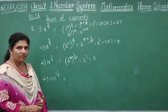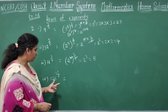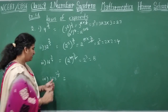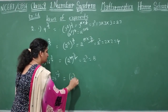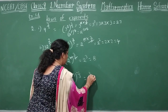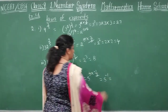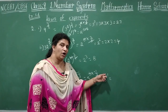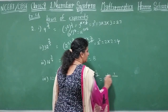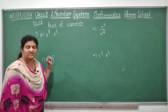Last sub-question: 125 power minus 1 by 3. There is a negative power — no problem. 5 multiplied 3 times gives 125, so write 5 power 3 whole power minus 1 by 3. Applying the law: 3 and 3 cancel, leaving 5 power minus 1. When you have a negative exponent, write it in reciprocal form: 1 by 5 power 1, which is 1 by 5. That is your answer.